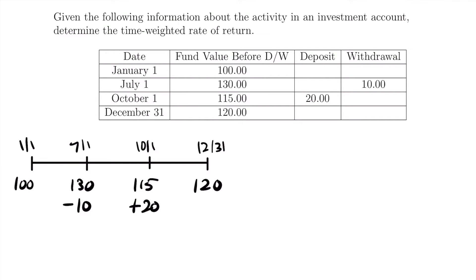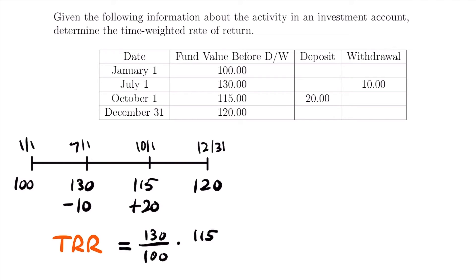Now we can set up our equation to calculate the time-weighted rate of return. We take the first reported balance that is not the initial balance — $130 — and divide by the initial balance of $100. Then we multiply by the next reported balance of $115, divided by the previous balance plus any cash flows: $130 minus $10, which is $120. Then multiply by the final balance of $120, divided by $115 plus $20, which is $135.